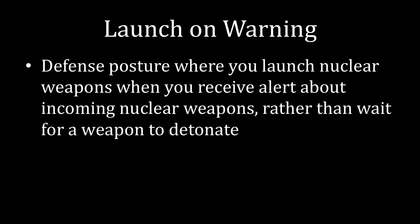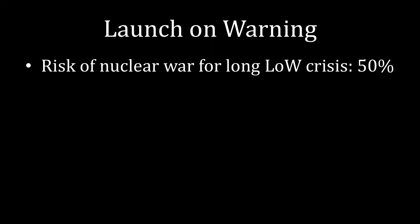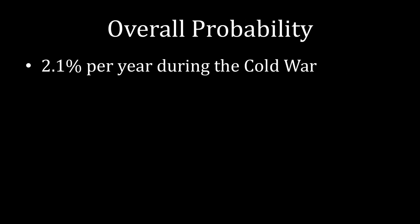A couple of studies have tried to look into this. The first focused on launch-on-warning situations — defense postures where you launch nuclear weapons when you receive an alert about an incoming nuclear weapon, rather than wait for a weapon to detonate. This is common when tensions are high. According to that study, if we were to have a long launch-on-warning crisis, the risk of nuclear war would be about 50 percent. A different study estimated a 2.1 percent chance per year of a nuclear war occurring during the Cold War.